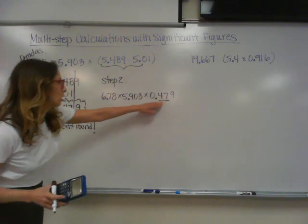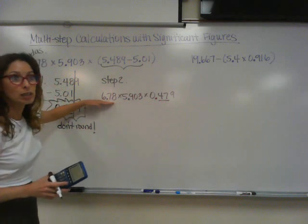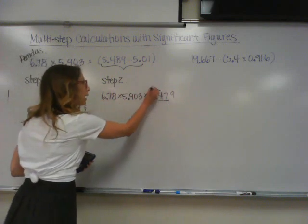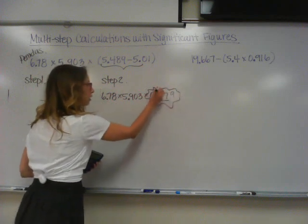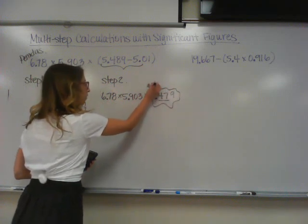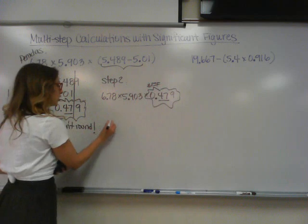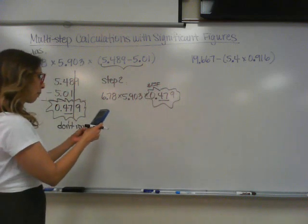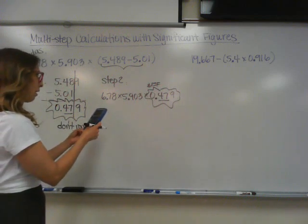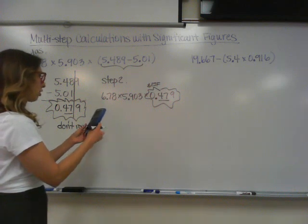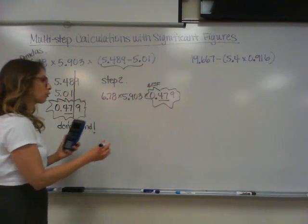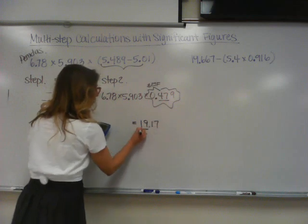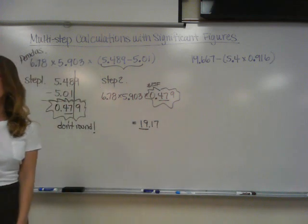We're looking for the term with the fewest sig figs. Wouldn't this one technically have the fewest? It's got two sig figs; this one is 4, this one is 3. We just didn't round this number off because we weren't done yet — technically it has two sig figs. So that means you want two sig figs in your answer. Multiply that by 5.903 and 6.78 — you get 19.17, so I'm underlining the 19.